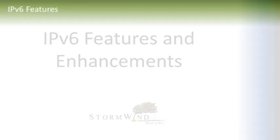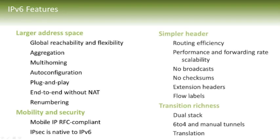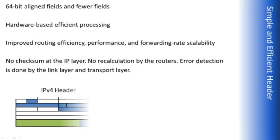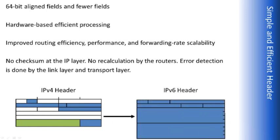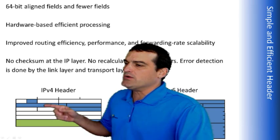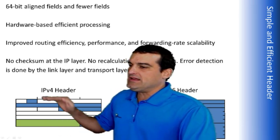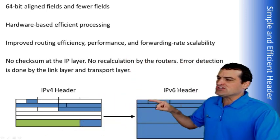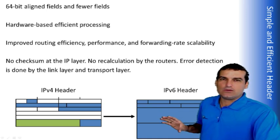So let's talk features and enhancements that are available. We've mentioned some — obviously the larger address space, the mobility, the security — but something that I want to emphasize here is a simplified header and transition richness. They did a really brilliant thing in IPv6: they recognized so many inefficiencies in routing with the IPv4 header that can be of variable length. They said we can make things much more efficient if we go ahead and make a fixed-size IPv6 header, and that's exactly what they did.